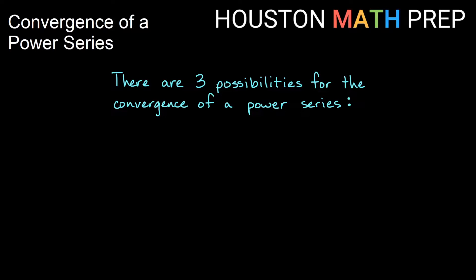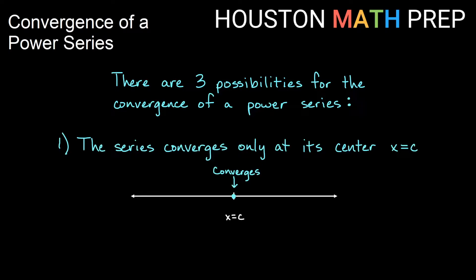There are actually three possible ways for a power series to converge. We know from our last video that a power series is guaranteed to converge at its center, so that's one of the possibilities — that the power series converges only at its center, x equal to c. It would converge for that one value of x, but every other value we plug in gives divergence.